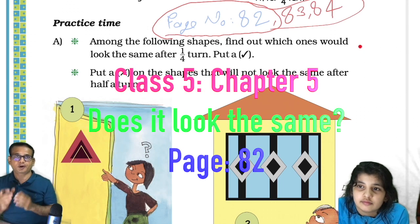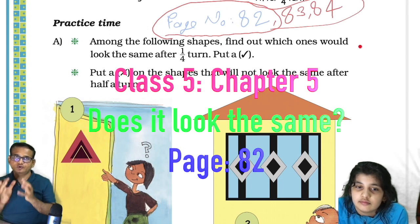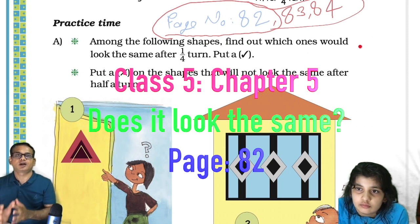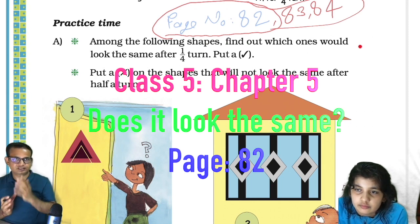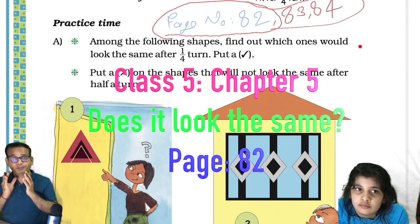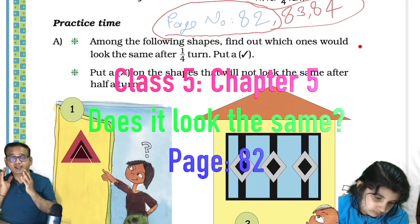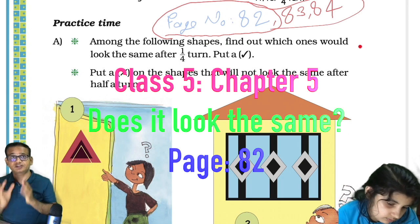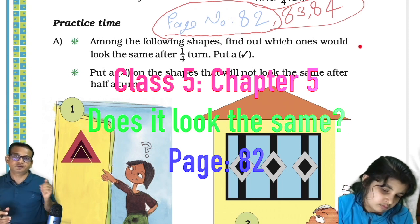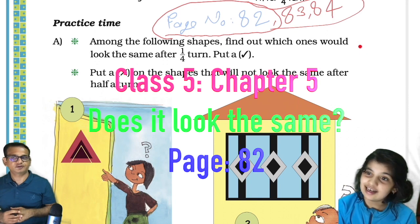Welcome back to this channel. This video is only for those students who cannot afford tuitions. Today we will be discussing pages 82, 83, and 84 of Chapter 5 'Does it Look the Same?' of Class 5 NCERT book Math Magic. Here with me is Avisha Rathod.